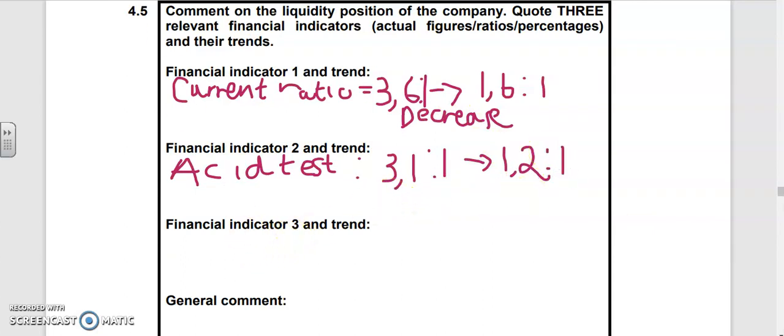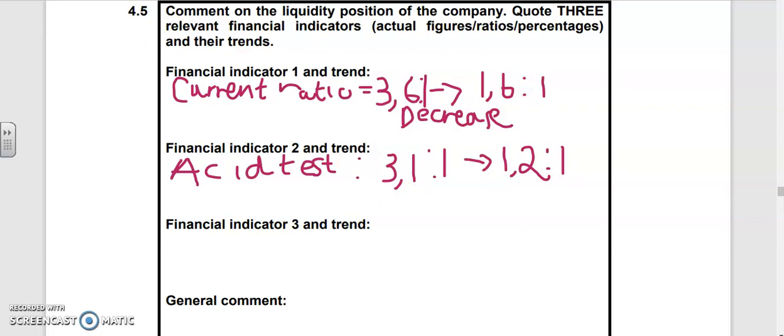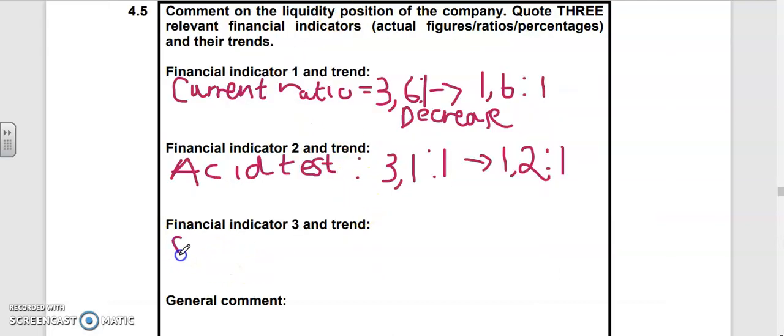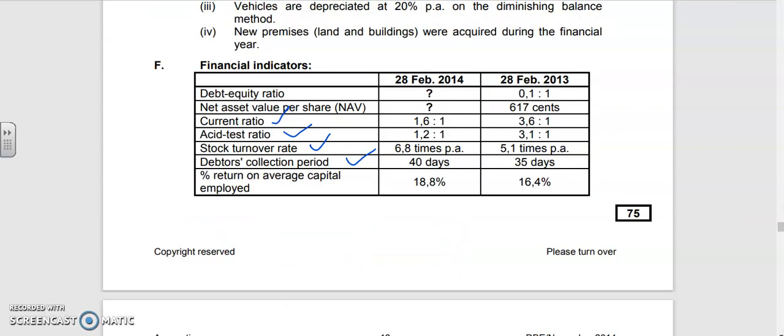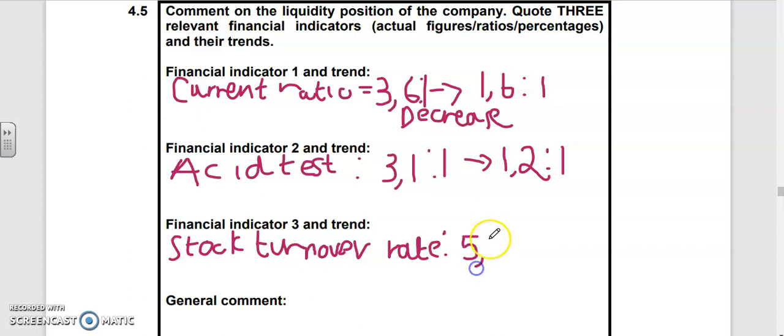Financial indicator three: stock turnover rate. 5.1 times to 6.8 times. You must state the name of it - very important because they say you need to indicate. There was a decrease in the first two, and here there was an increase.